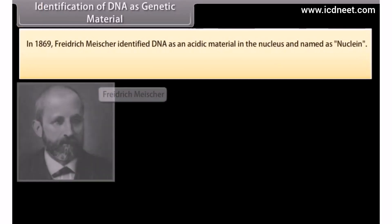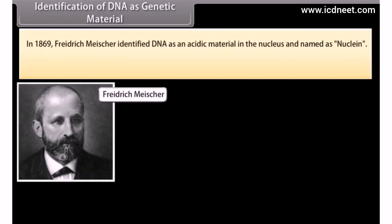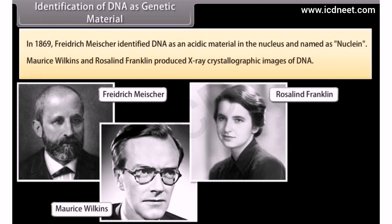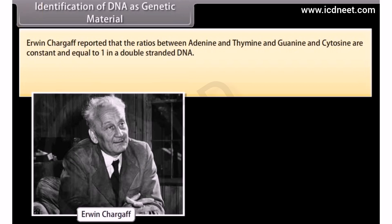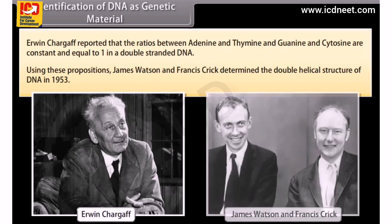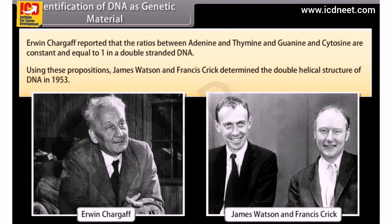Identification of DNA as genetic material. In 1869, Frederick Miescher identified DNA as an acidic material in the nucleus and named it nuclein. Morris Wilkins and Rosalind Franklin produced X-ray crystallographic images of DNA. Erwin Chargaff reported that the ratio between adenine and thymine, and guanine and cytosine, are constant and equal to 1 in a double-stranded DNA. Using these propositions, James Watson and Francis Crick determined the double helical structure of DNA in 1953.